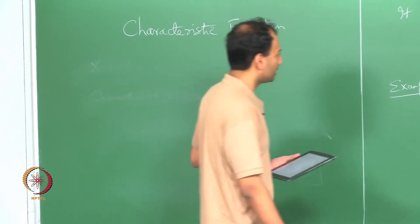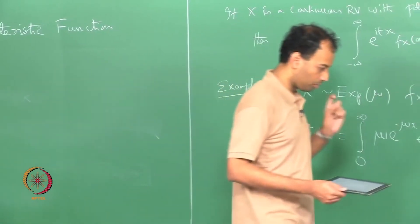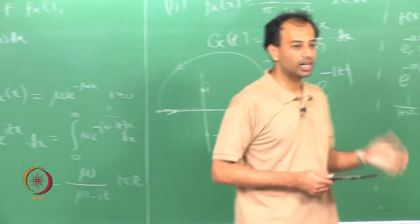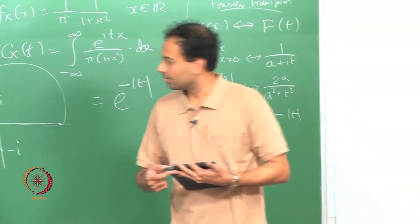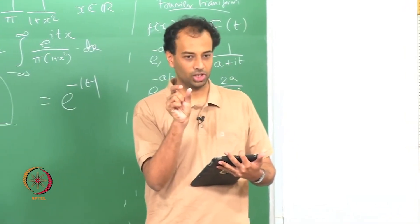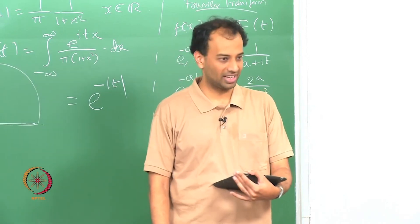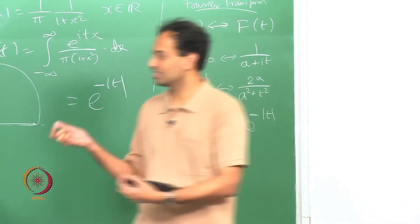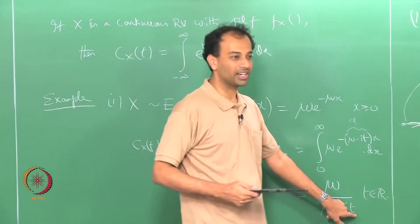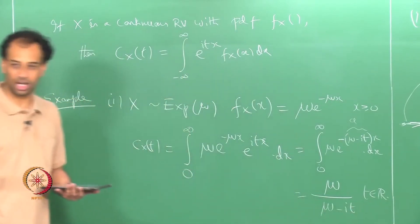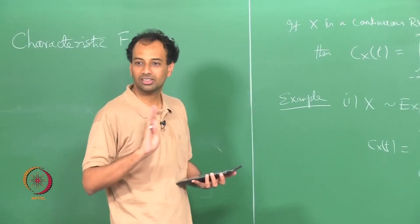In cases where the moment generating function exists in an interval, you can actually obtain the characteristic function by simply putting s equal to it. When the moment generating function exists in some interval around the origin, you know it is an analytic function and therefore analytic on the imaginary axis as well. So in those cases — for example in the case of the Gaussian — you can just put s equal to it to get the characteristic function.